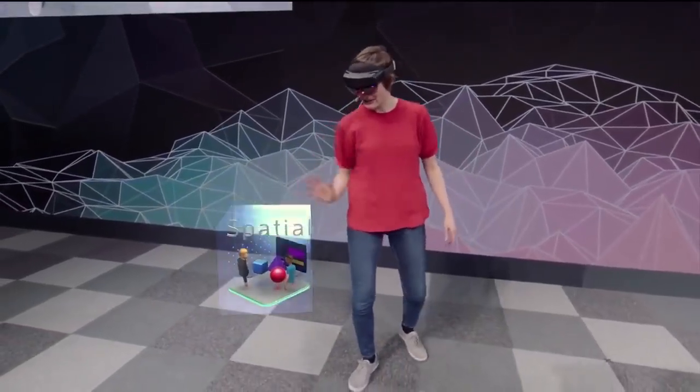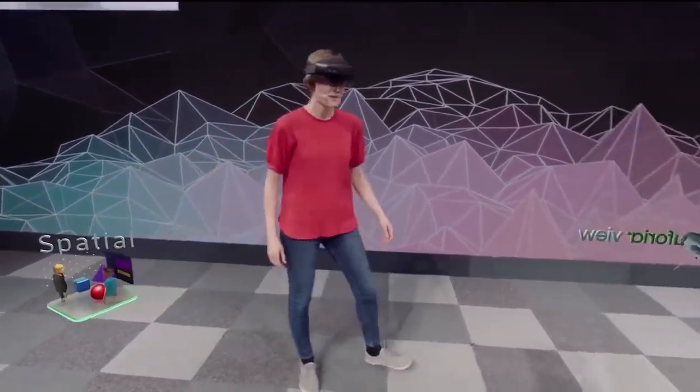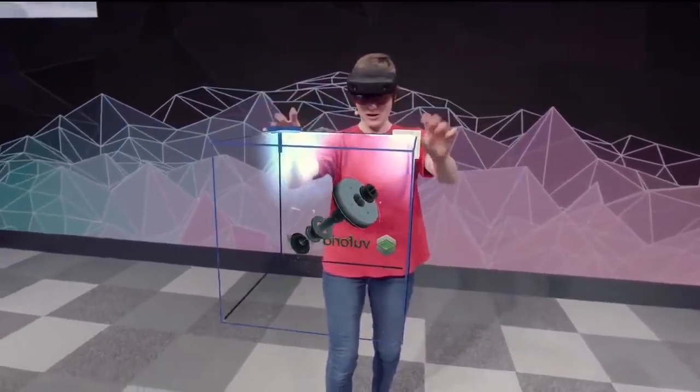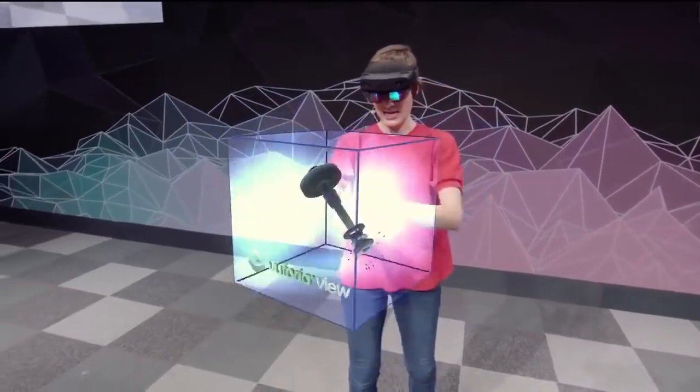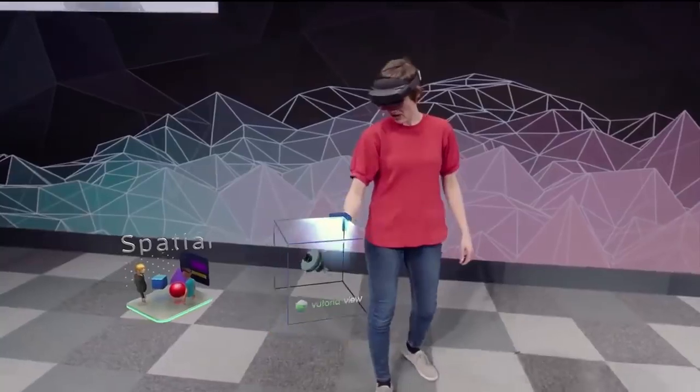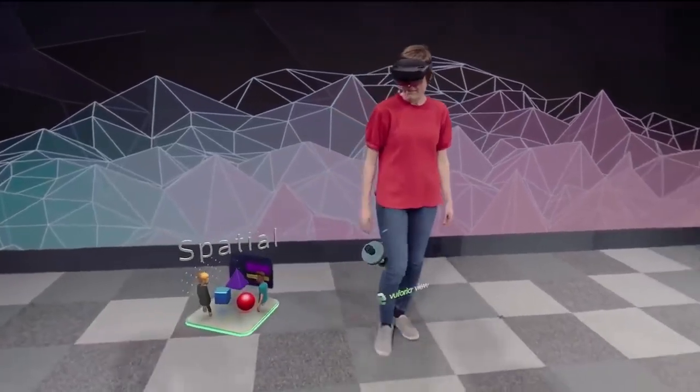This is an app I've got called Spatial. Let me just put it right there. I've got another app here called Vuforia View. Now, it's a little big, so let me just use two hands here to make it smaller, and then rotate it so you can see. There we go. And then let me put it down here. Maybe make it a bit smaller. Yeah. That's nice.